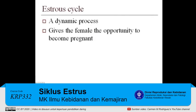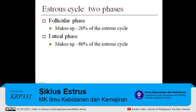The estrus cycle is a very dynamic process and each estrus cycle gives the female the opportunity to become pregnant. The estrus cycle is comprised of two phases: the follicular phase and the luteal phase. The follicular phase makes up about 20% of the estrus cycle, while the luteal phase makes up about 80%.